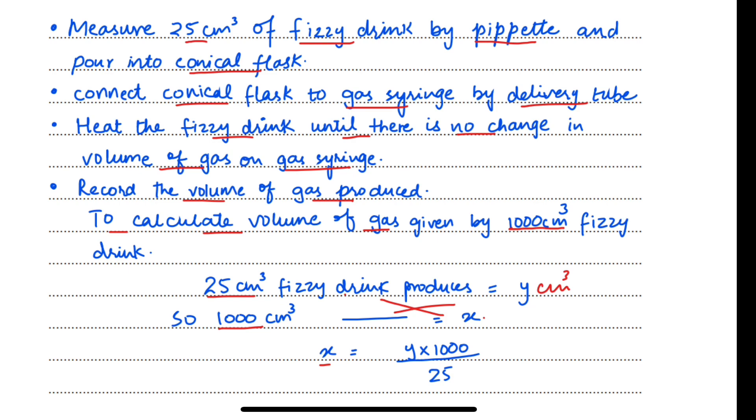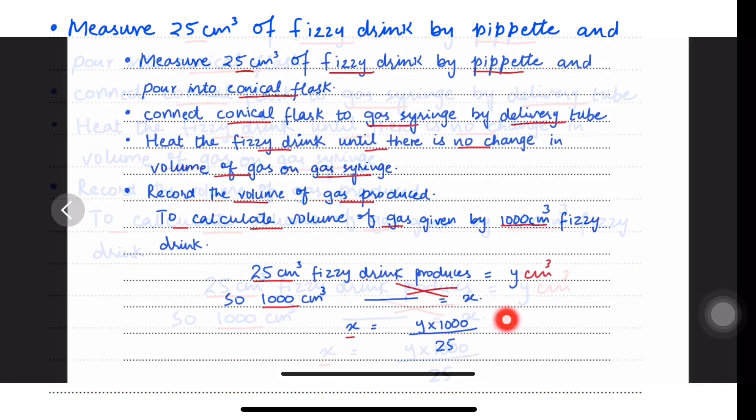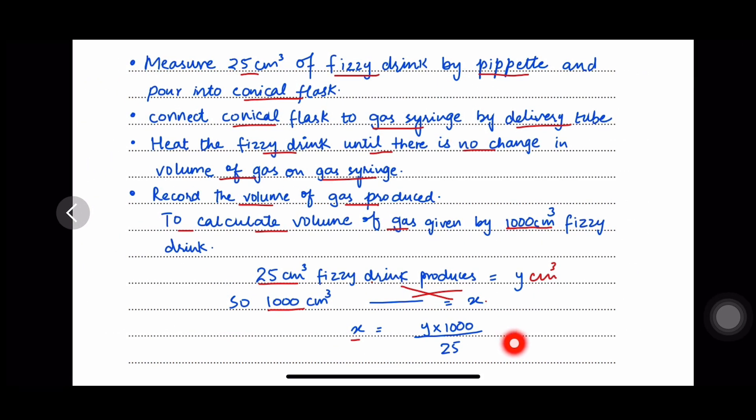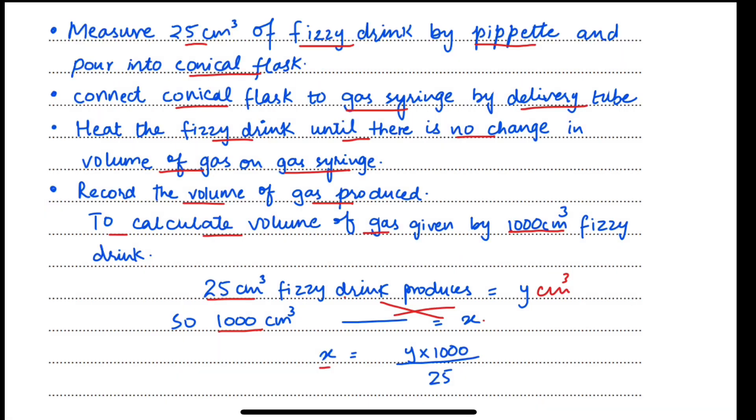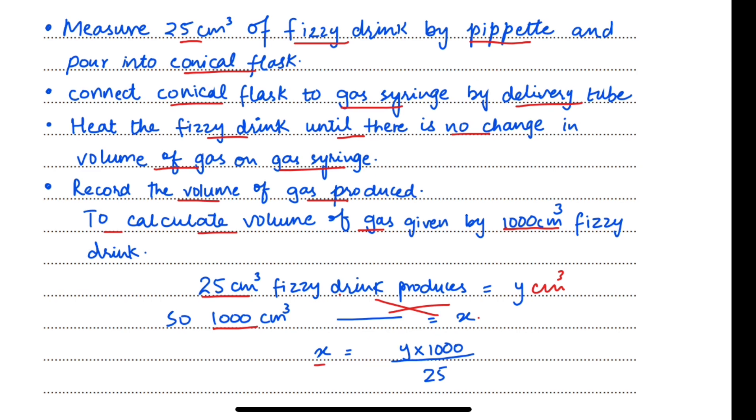So if 25 cubic centimetres fizzy drink produce Y cubic centimetres of carbon dioxide, then 1000 cubic centimetres of fizzy drink will produce X. So by cross multiplication we can find out the volume of gas coming out from 1000 cubic centimetres. So X will be calculated this way: Y times 1000 divided by 25.